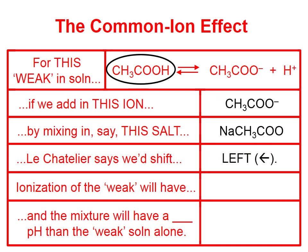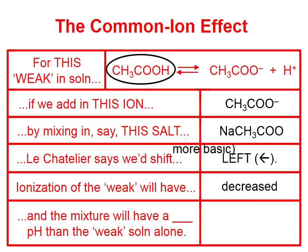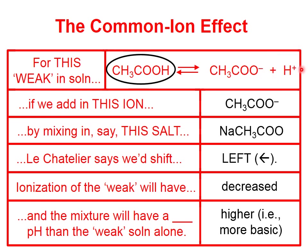If we shift to the left, the ionization of the weak will have decreased. We're going to produce more acetic acid, and the mixture will have a higher — a more basic pH — than the weak solution would by itself. If we shift to the left, the amount of hydrogen ion in the solution is going to decrease, so the pH will be higher, that is, more basic. The ionization of a weak decreases when there's a common ion salt in the mix.